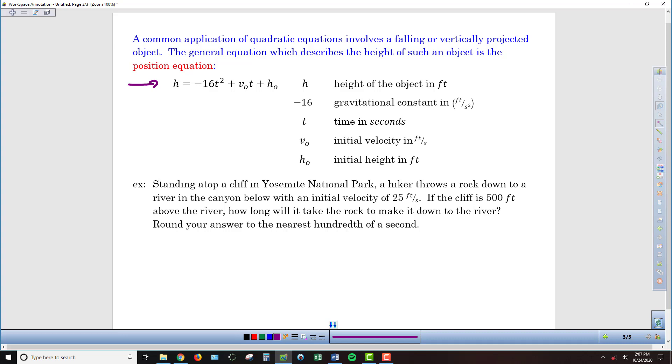In this equation, we've got a bunch of things that we have to keep track of. First of all, h is going to represent the height of the object in feet. Then, this negative 16 that's in front of the t squared is the constant that's going to be applied that represents gravity.